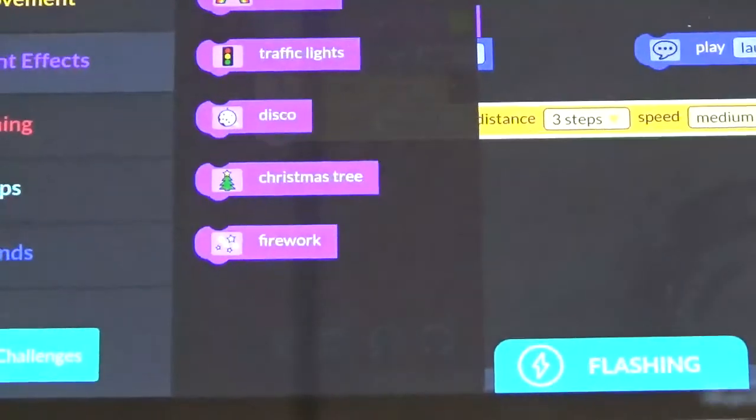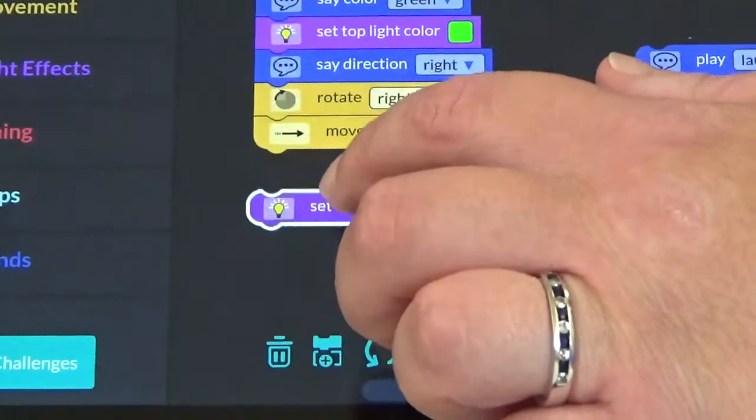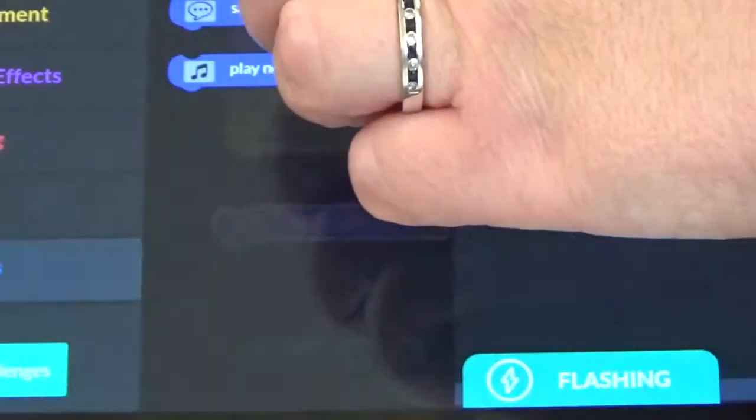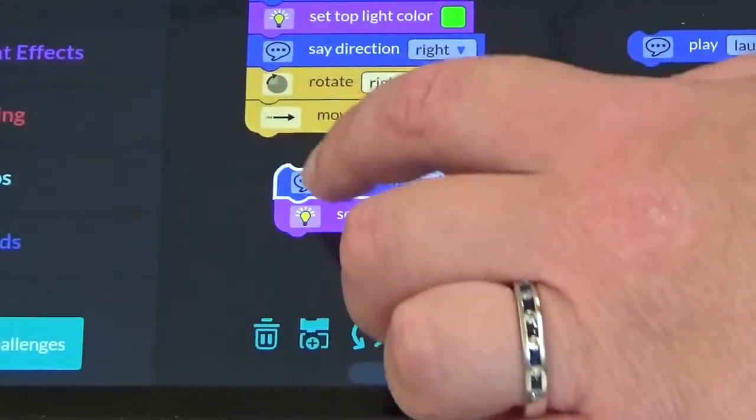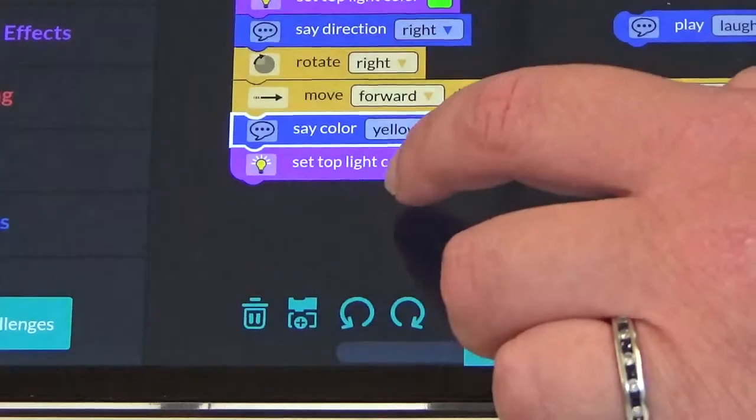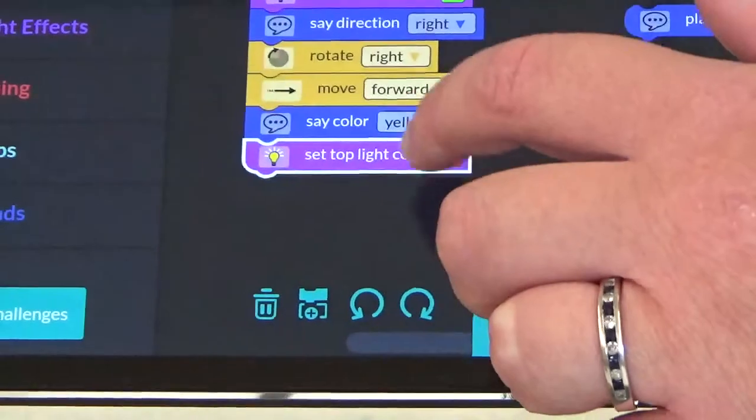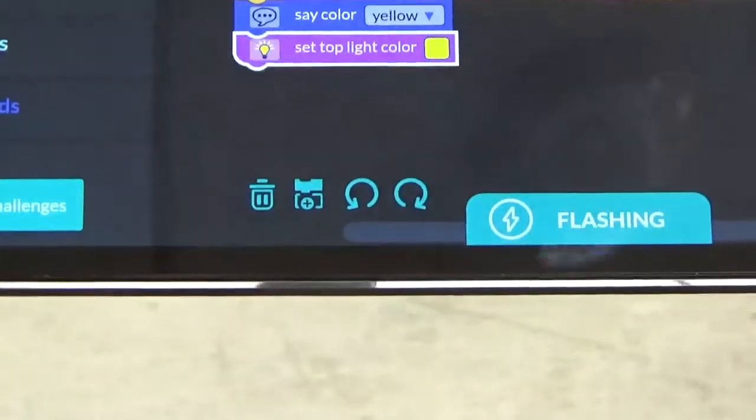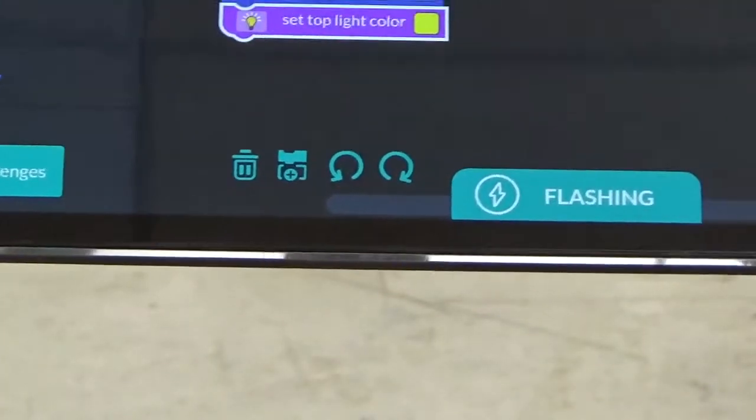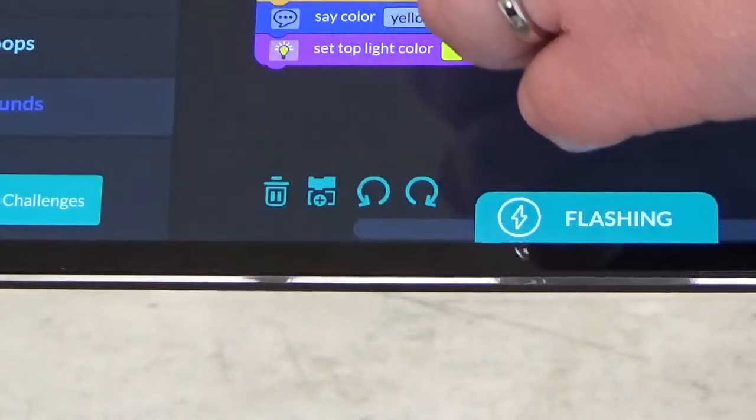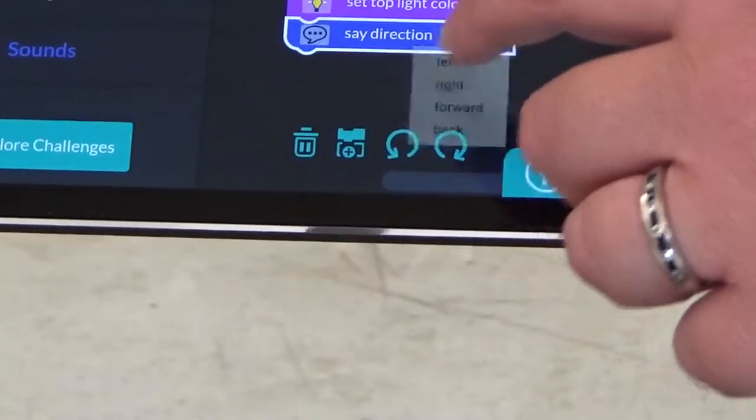Then we want to change his color. Let's go back to sounds. Let's see what colors he can say. And we'll attach that. Let's have him set it to yellow. So, we'll have him say the color yellow and then set top light color to yellow. So, what direction do you think he'll need to turn now? Most likely right again. So, we'll go back to sounds. We're going to find say direction block. We're going to attach it. We're going to select right.